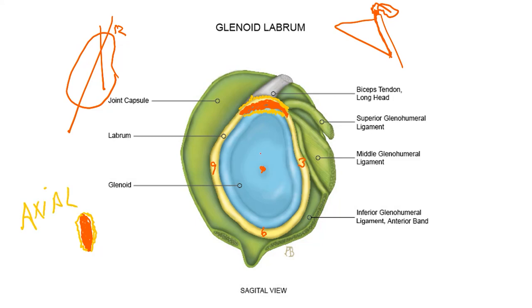The toughest one to conceptualize is SLAP 4. If you have a SLAP 2- or SLAP 3-type tear that decides to dissect into the biceps — more often longitudinally than horizontally — you've got a SLAP 4. These fulfill the Snyder criteria for SLAPs 1 through 4, the most noted among the SLAP classification.